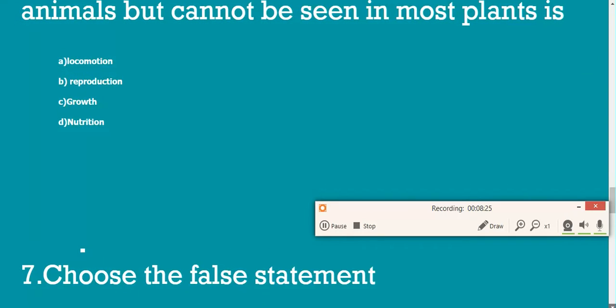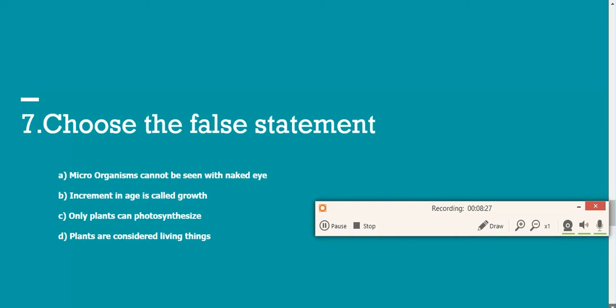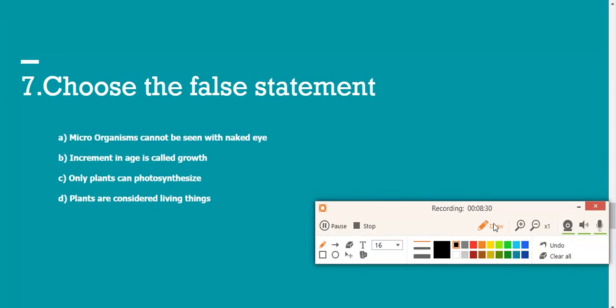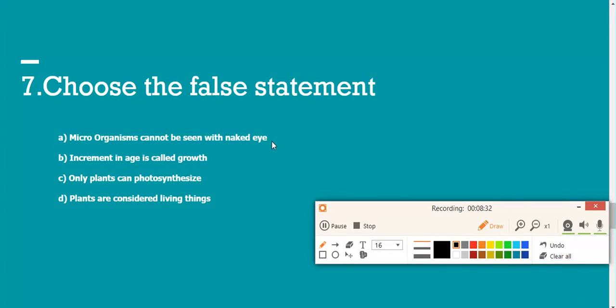Choose the false statement. First one says microorganisms cannot be seen with naked eye - correct. Increment in age is the growth - no, it's the amount and the size. Only plants can photosynthesize - correct. Only plants are considered - correct. So option B is your answer.